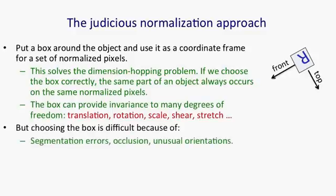Unfortunately, choosing the box is difficult. It's difficult because we might have segmentation errors, we might have occlusion, so you can't just shrink a box around things, and we might have unusual orientations. That example of the upside down R makes it clear that we have to use our knowledge of what the shape is to help us decide what the box is.